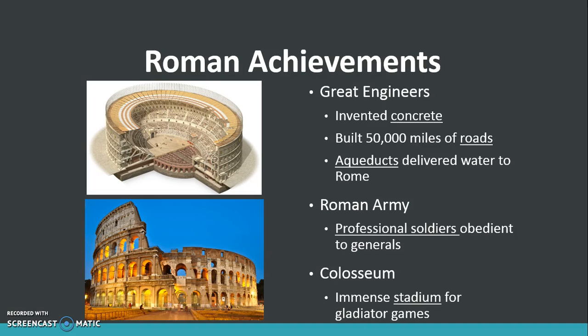During the height of the Roman Empire, a lot of achievements came out of this civilization. They were great engineers. They invented concrete and built over 50,000 miles of roads. They also created aqueducts to help deliver water from distant places into the empire. The Roman army were the first professional soldiers who were obedient to generals, and they also constructed the Colosseum, which can be pictured here.